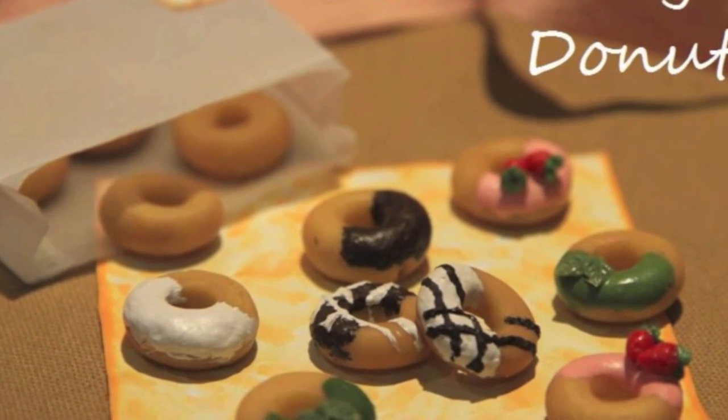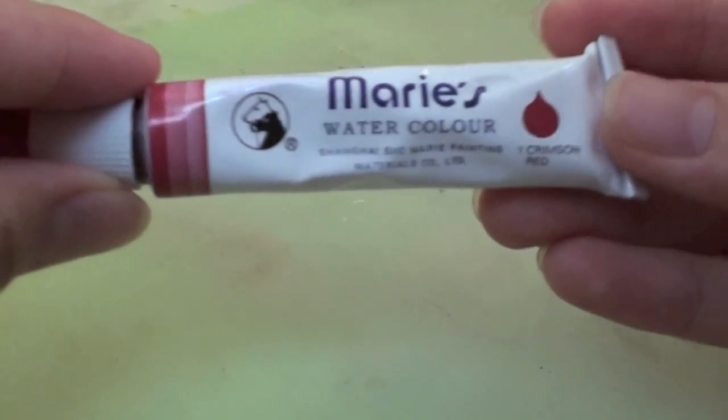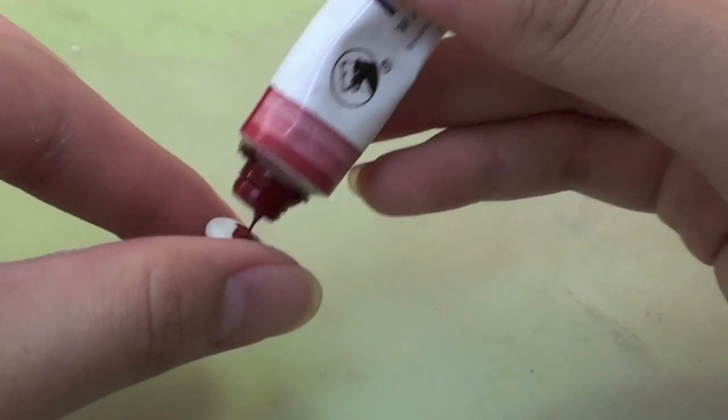Start off by making the strawberries. Mix the clay with watercolor Crimson Red.